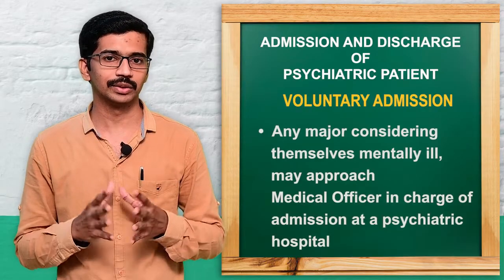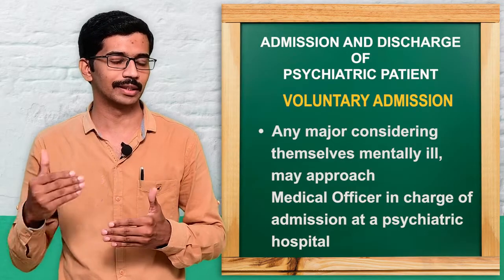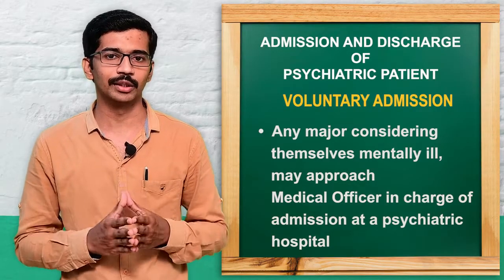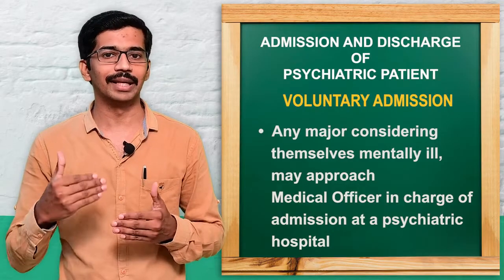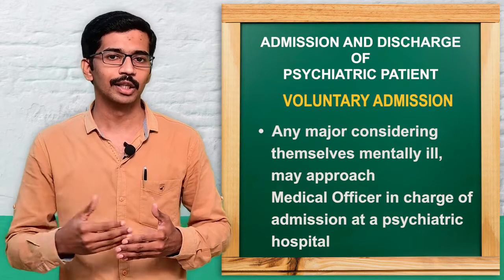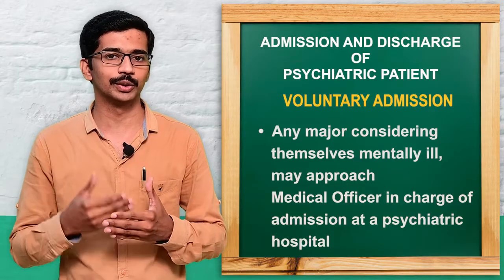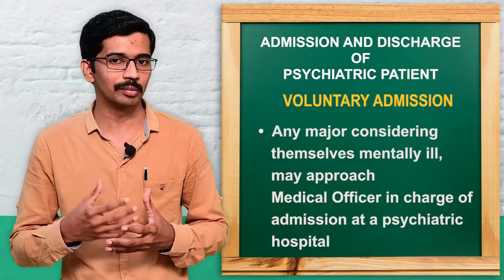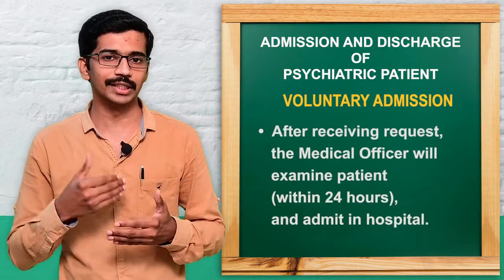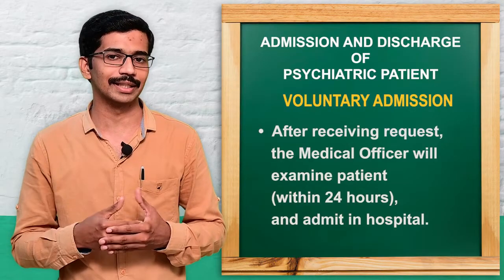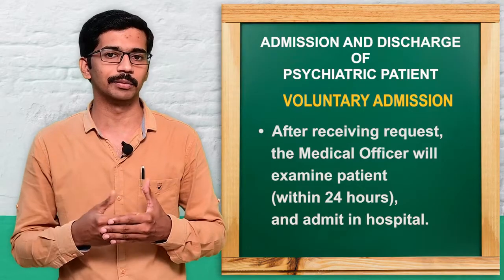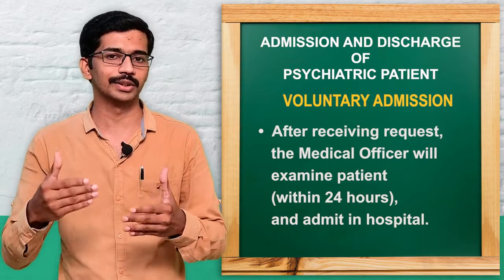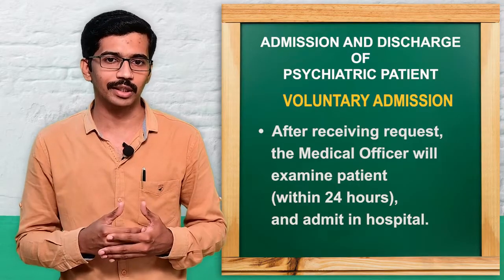In voluntary admission, any person who is a major, if he feels that he is mentally ill or considers himself mentally ill, he can approach a psychiatric hospital or the medical officer in charge and request treatment. After receiving the request, the medical officer will examine the person within 24 hours, and if satisfied that the person needs psychiatric treatment, the person will be admitted to the hospital.